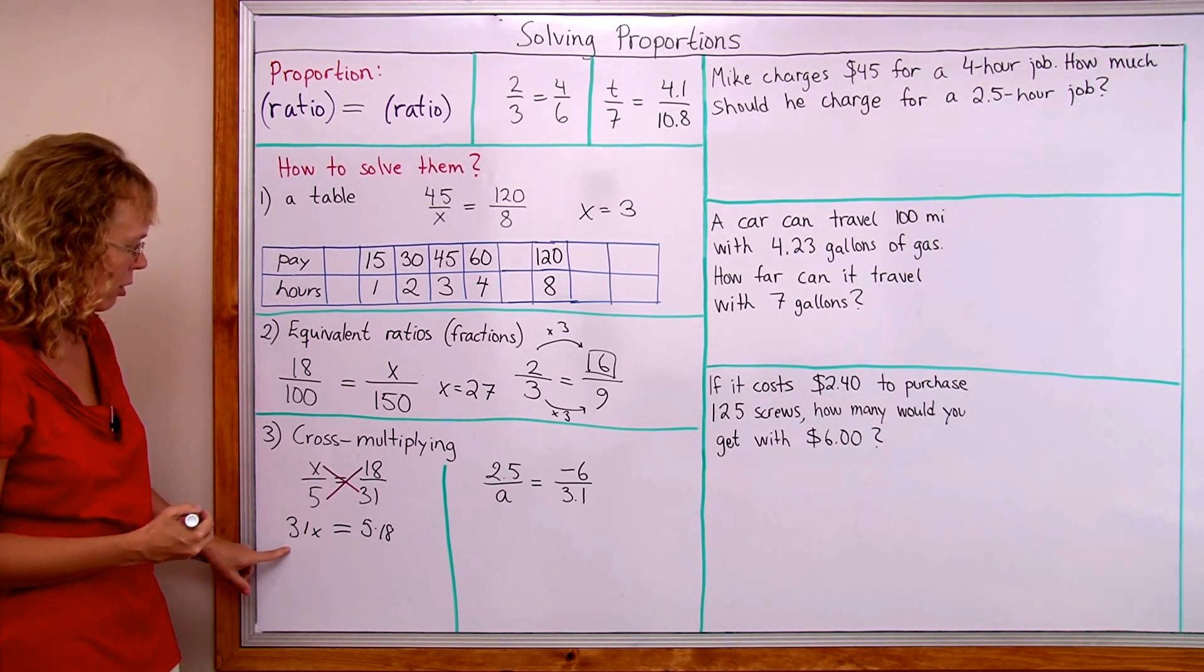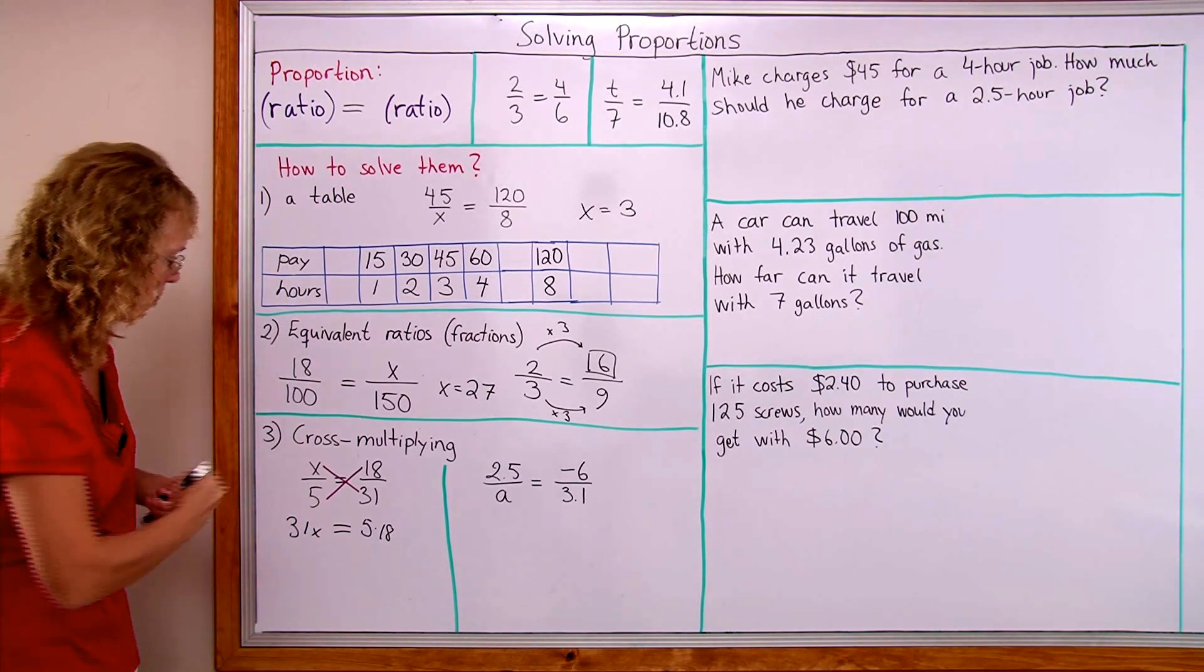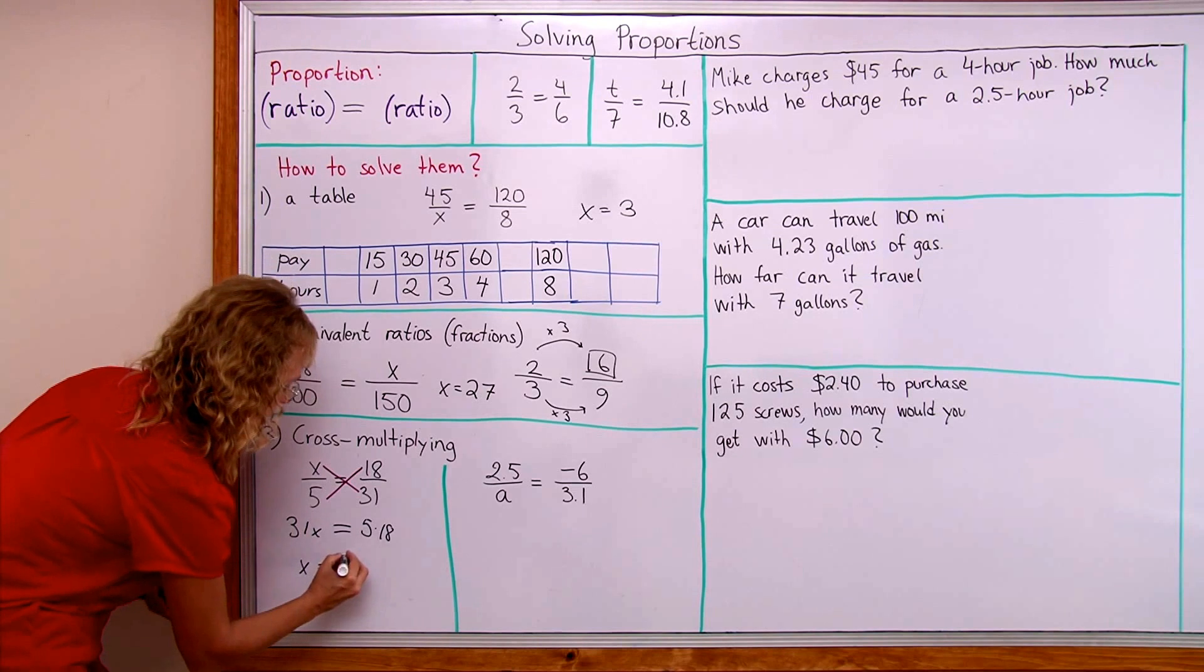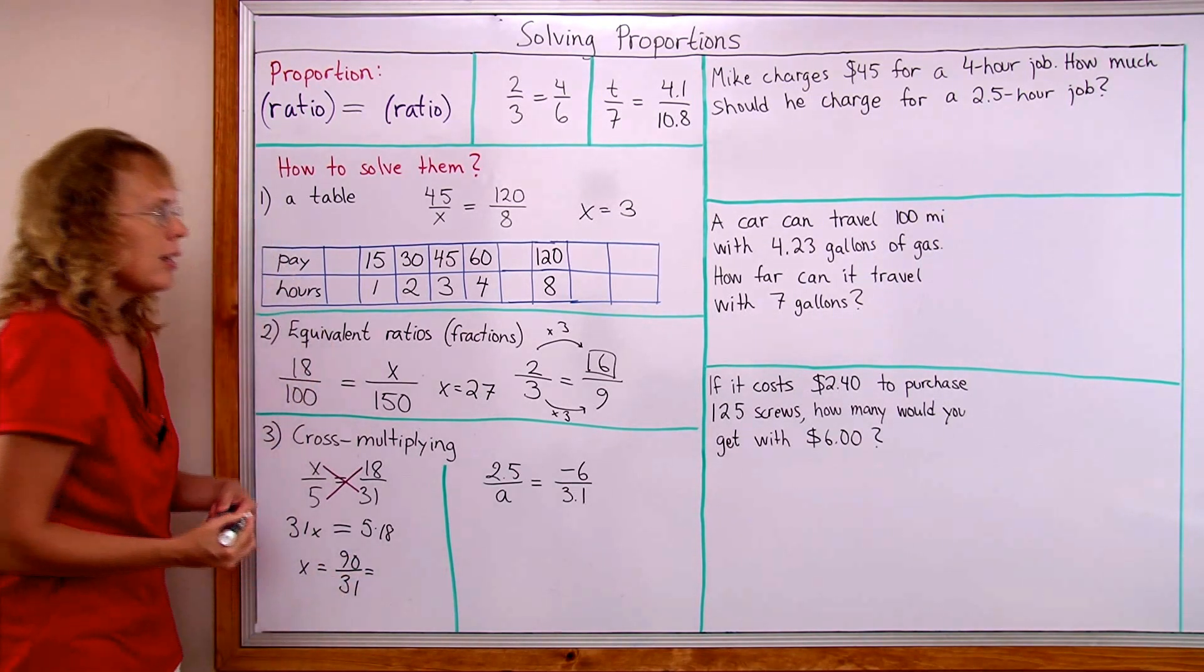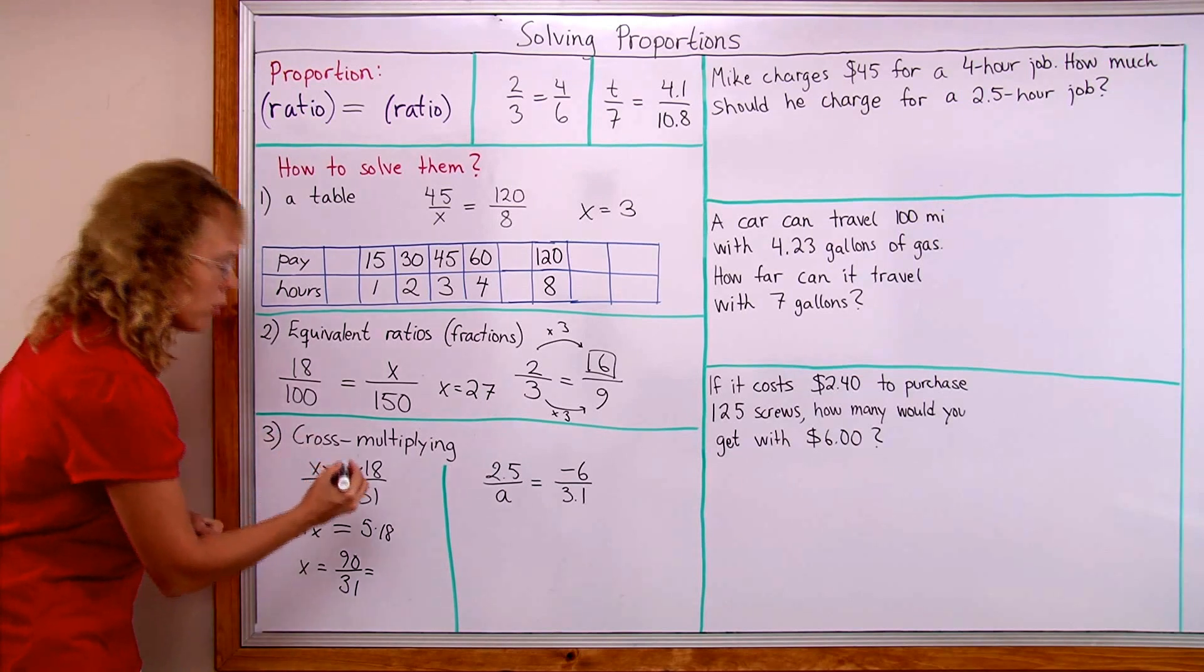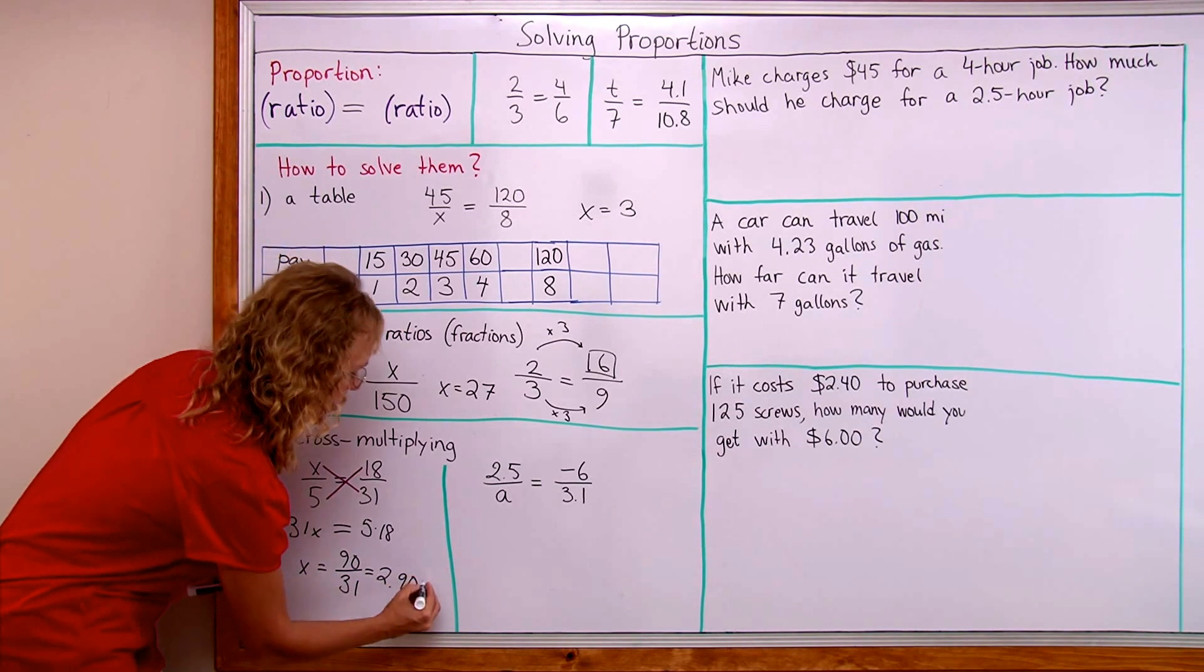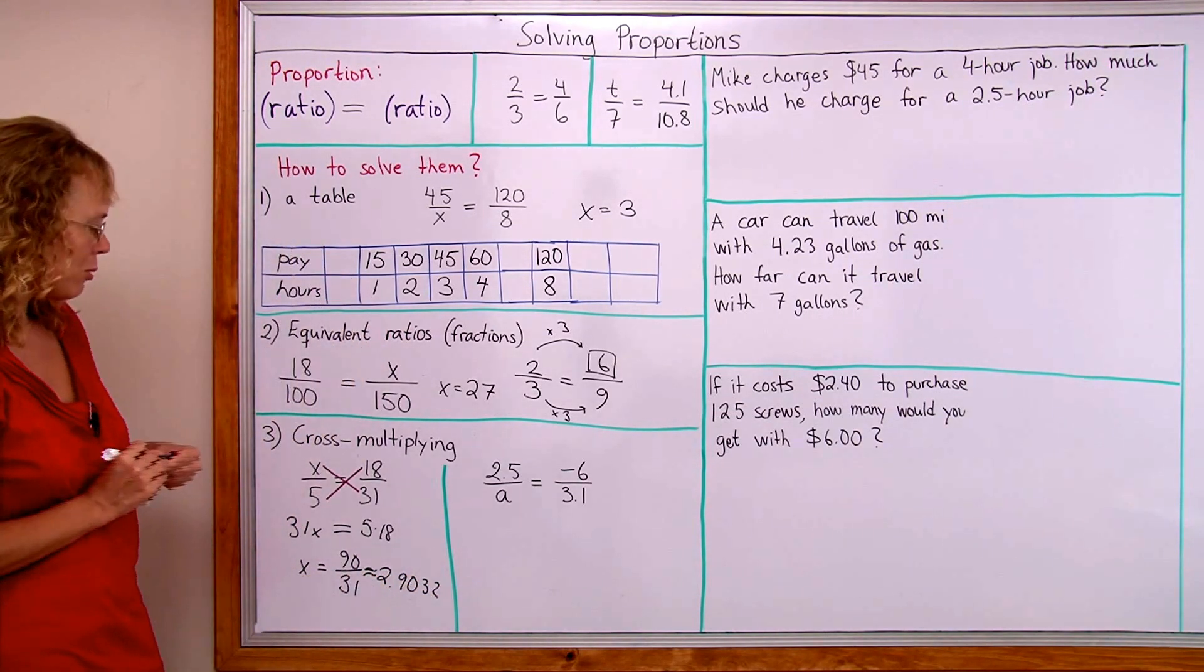In this case, of course, you need to divide both sides by 31. So we will get X equals, now this one here is 90 and then divided by 31. And I calculated it and it is about 2.9032. Should be about, okay. It's rounded.